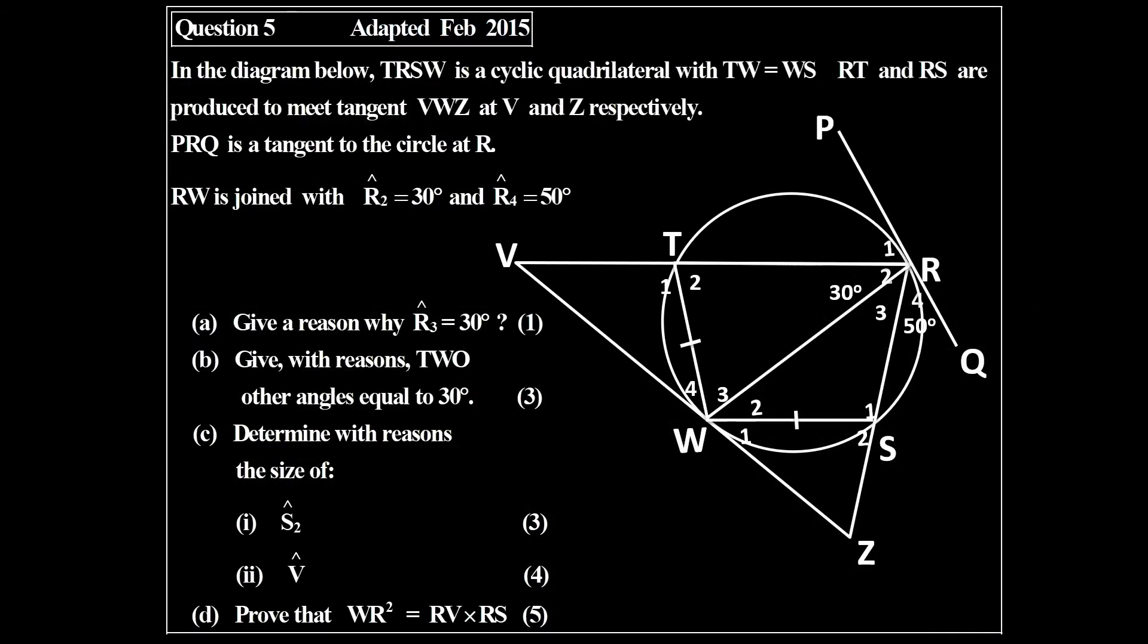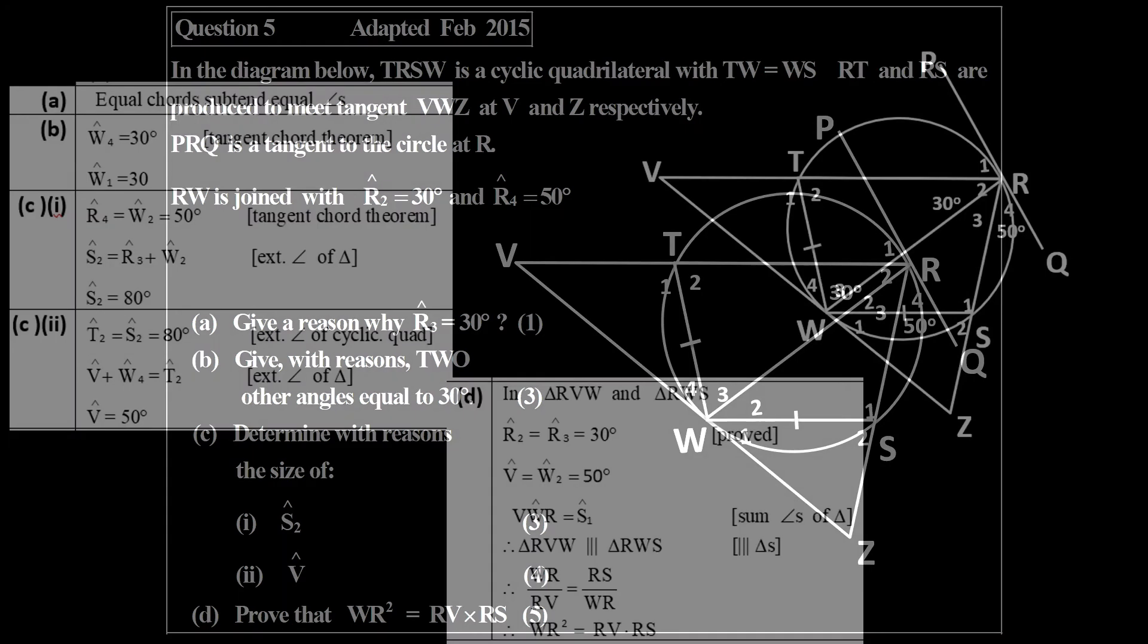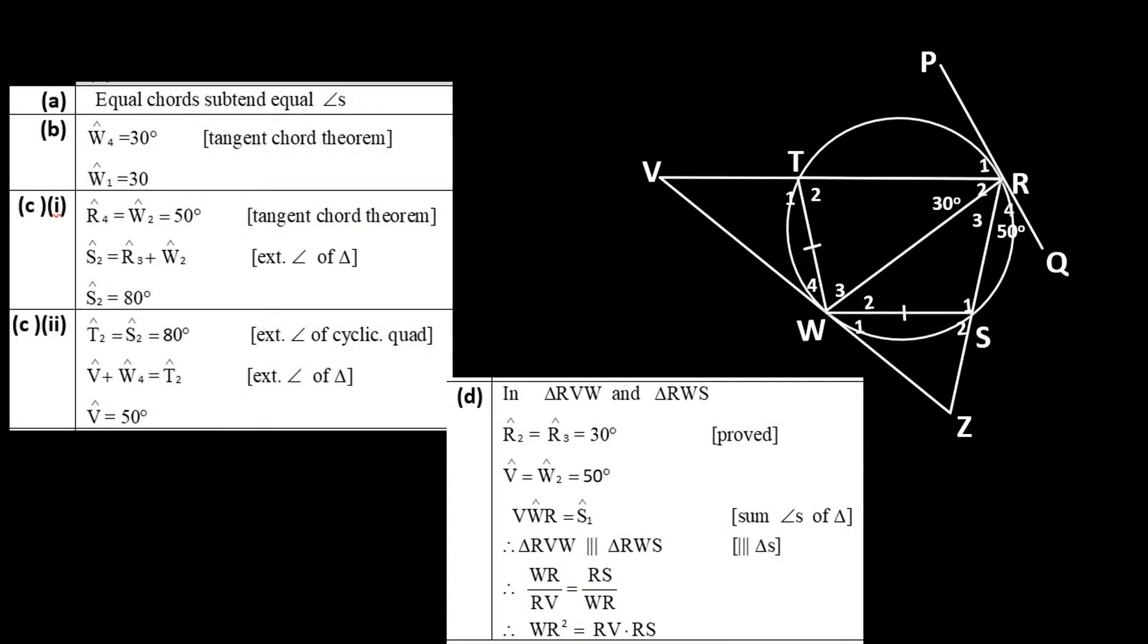And the last question comes from February 2015. First of all, we have to calculate the size of some angles and then we have to prove a proportion there. And to prove that proportion we'll prove two triangles are similar, as you can see there.